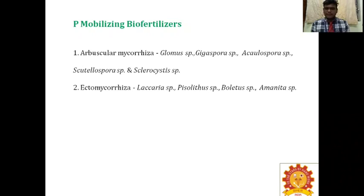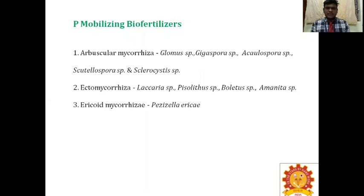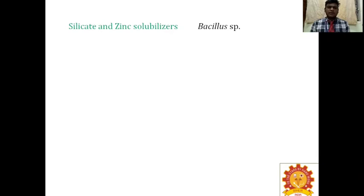Next is ectomycorrhizae. Arbuscular mycorrhizae is endomycorrhizae because it is present inside the plant. Ectomycorrhizae association happens outside the plant; examples are Amanita, Pisolithus, Boletus, and Amanita species. Ectomycorrhizae doesn't have vesicles and arbuscules; instead it has a Hartig net — fungus penetrates into the root cortex for nutrients. Erytoid mycorrhizae is classified under ectomycorrhizae; orchid mycorrhizae example is Rhizoctonia solani. Some microbes solubilize macro and micronutrients — examples are silicate and zinc solubilizers; Bacillus species are involved in this activity.